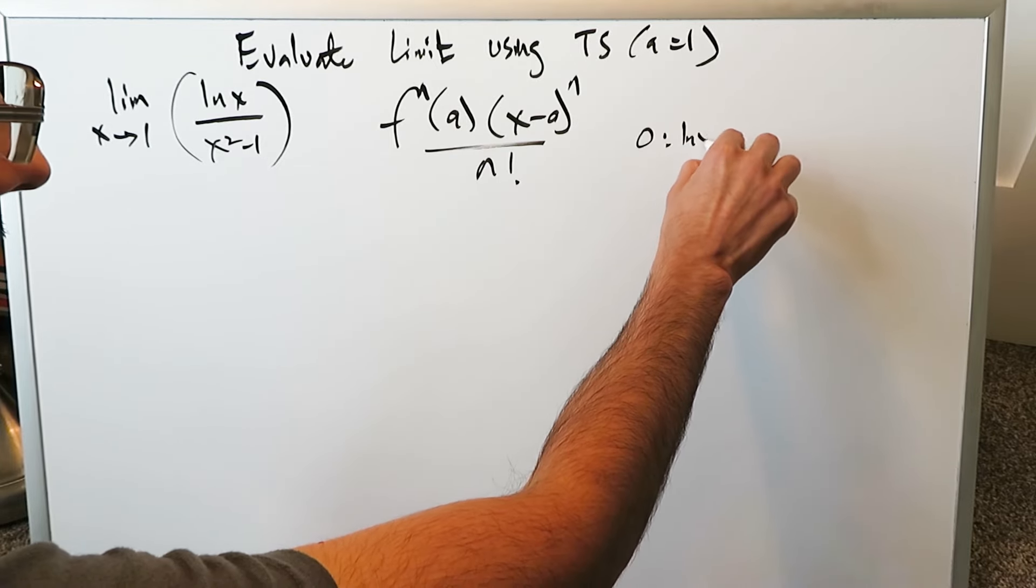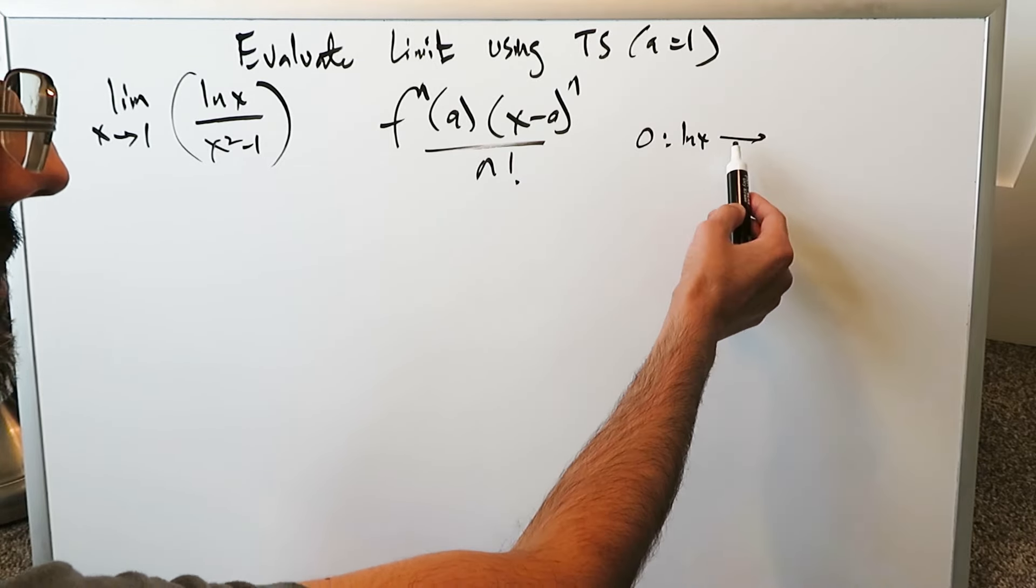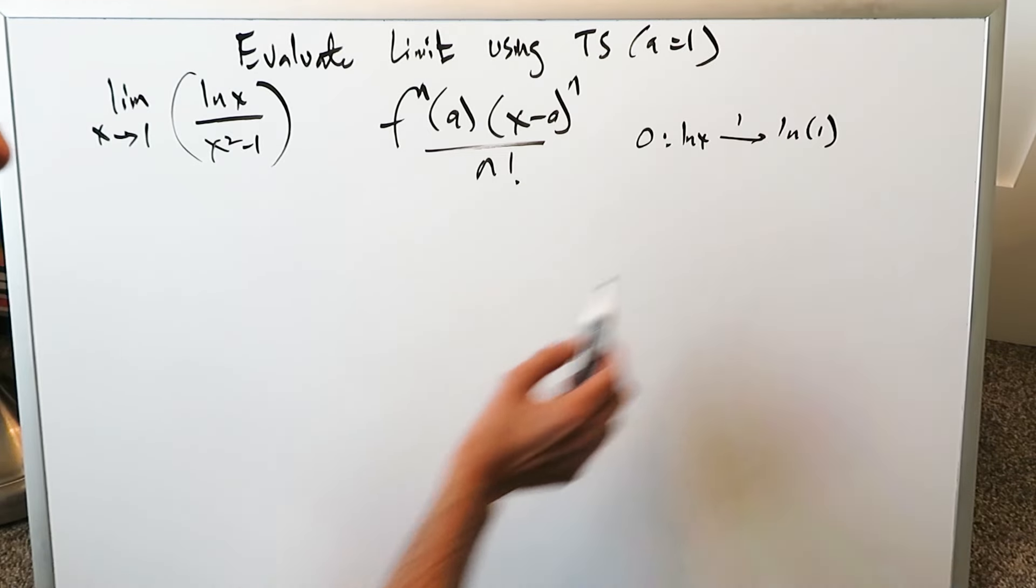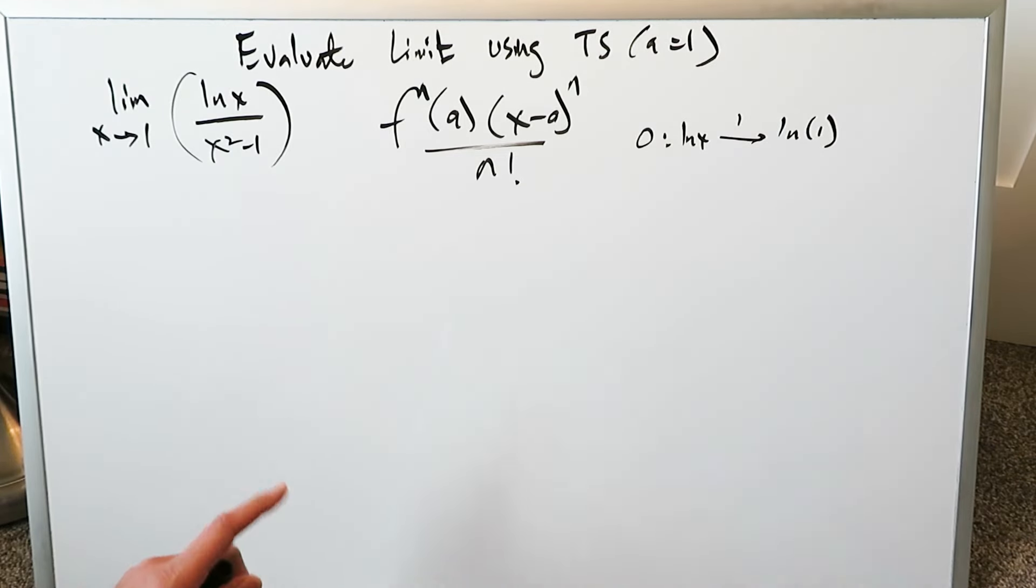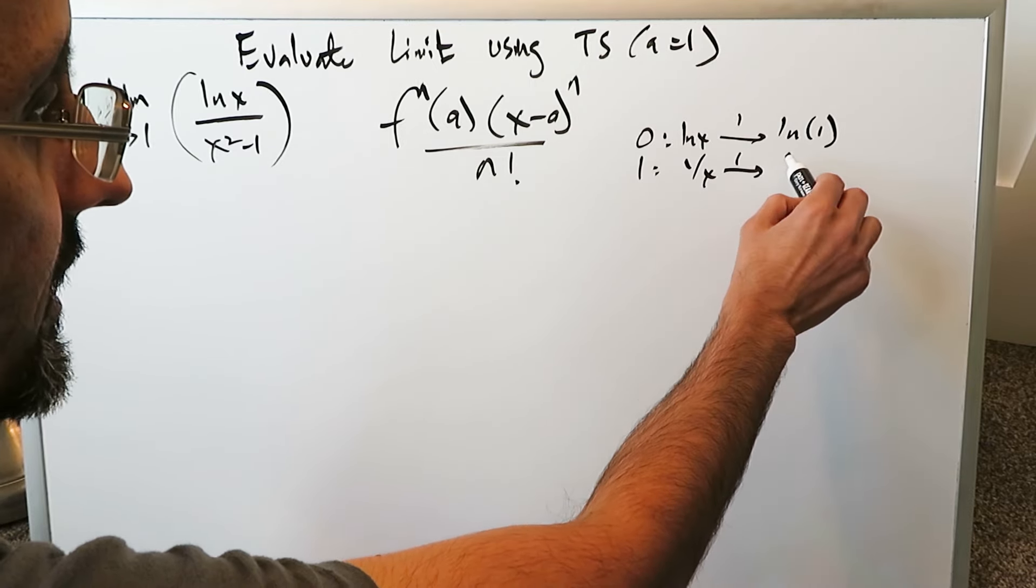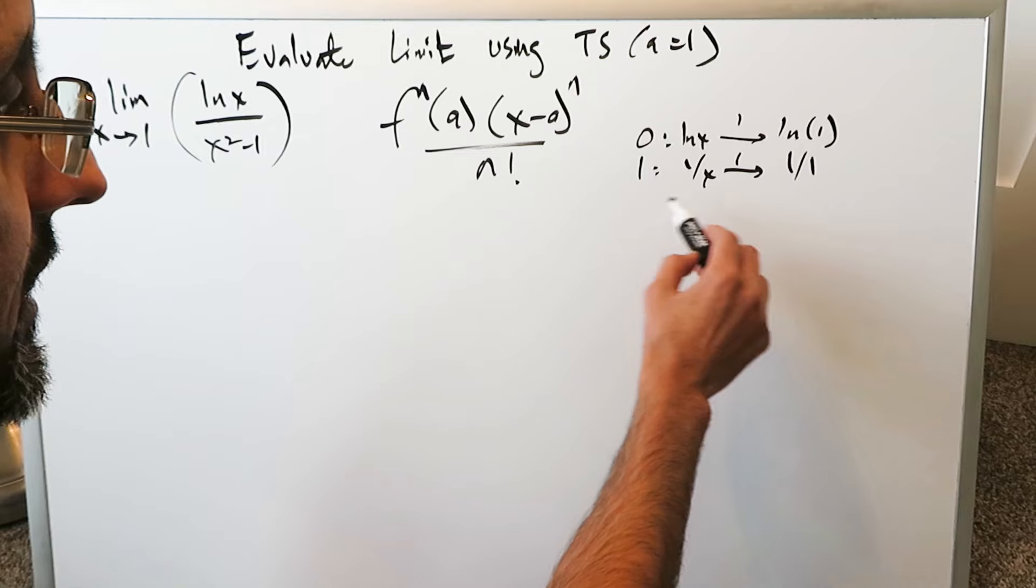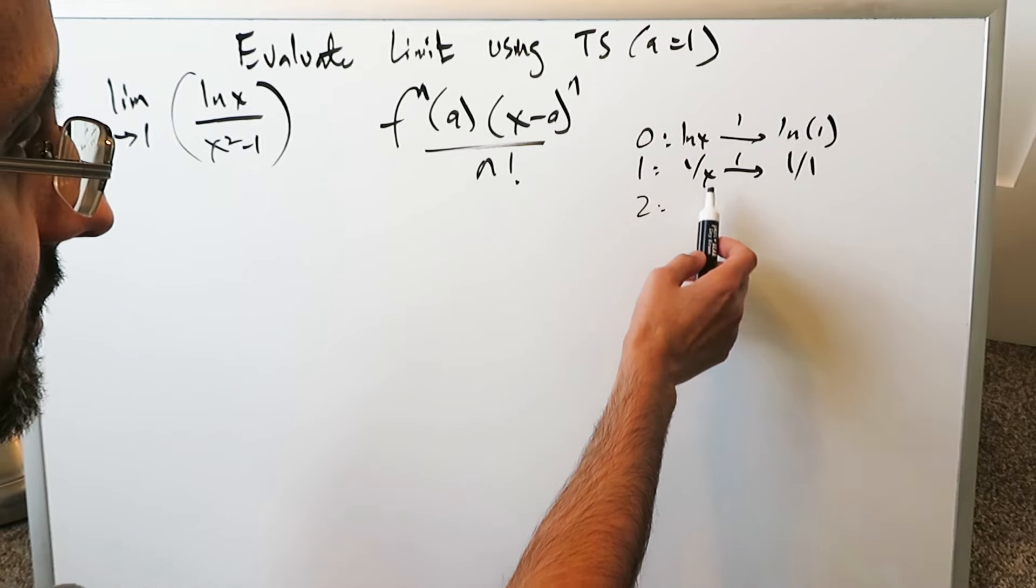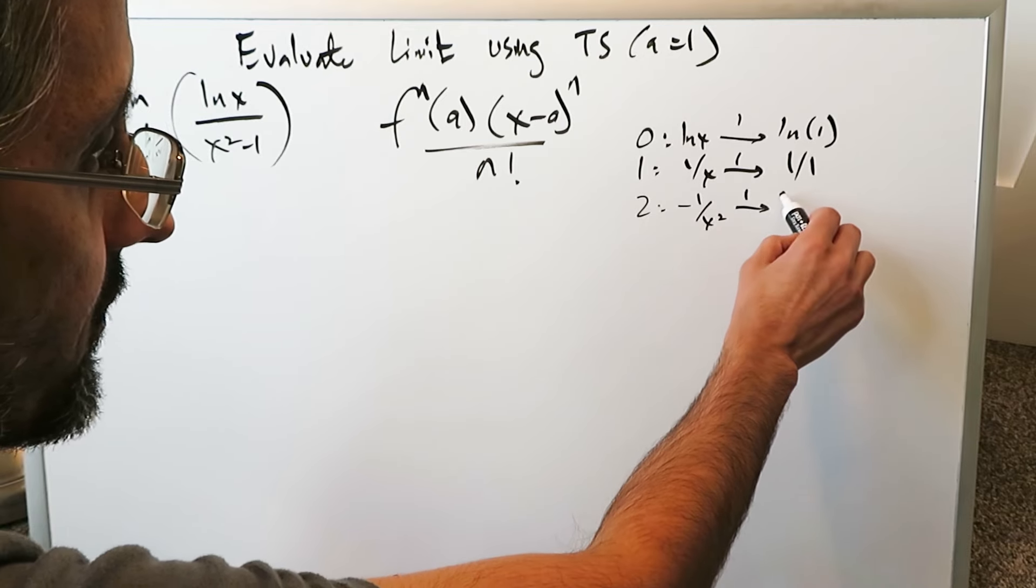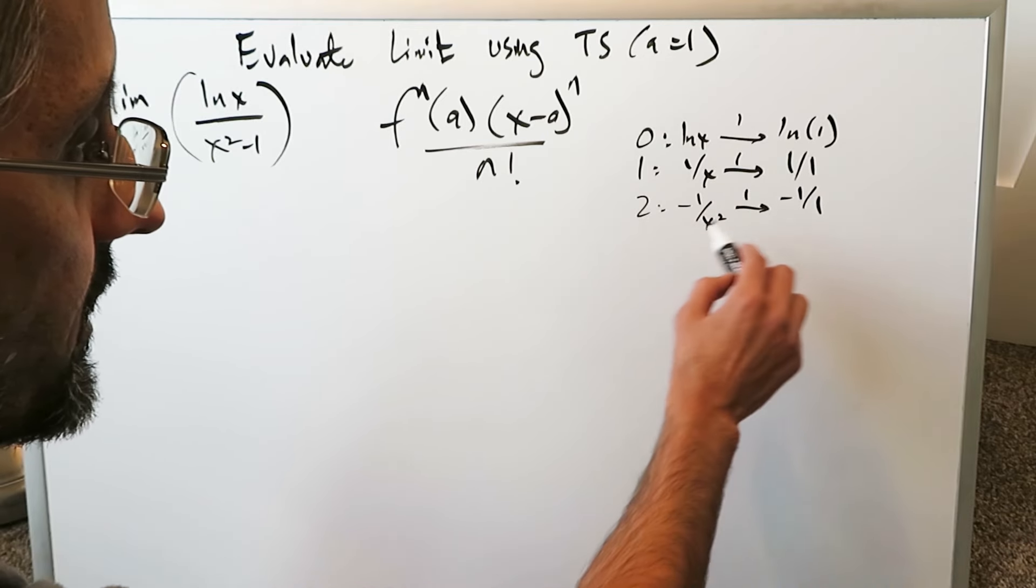The zeroth order derivative of natural log x is just natural log x. The original function when you put 1 in it, you're looking at natural log of 1. Remember again A equals 1. The first order derivative is 1 over x. When you put 1 in here you're looking at 1 over 1. The second order derivative of natural log x, you're doing the derivative of 1 over x. It will be minus 1 over x squared. You're putting a 1 over here and you'll get a minus 1 over 1.